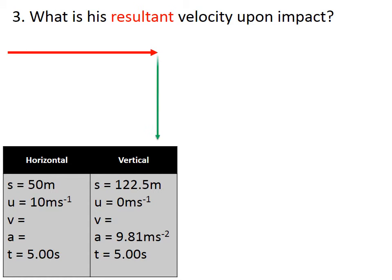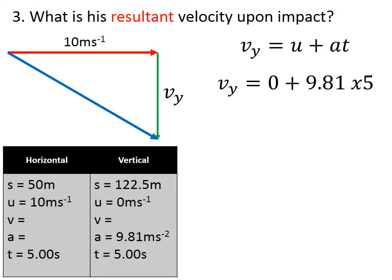We've already got his horizontal velocity, but in order to figure out the resultant component we're going to also need the vertical velocity. We're going to use this equation here, check what values we've got, and this will give an answer of 49.05 meters per second. That's pretty speedy and unfortunate for Justin.